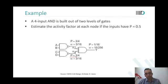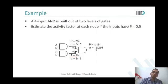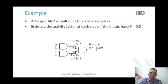A student notes that two bubbles could be cancelled out directly. The instructor explains we went through this detail because in any arbitrary circuit you need to be able to find the activity factor — practice is needed for that.